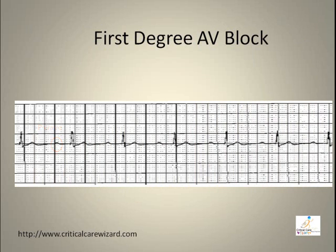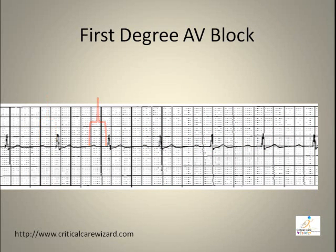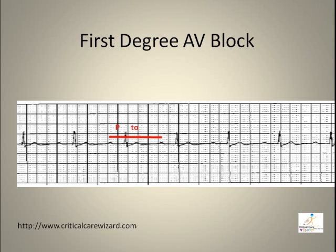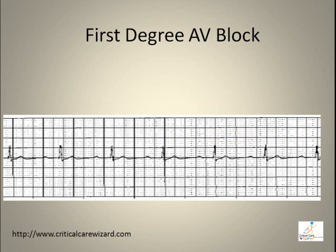In first degree AV block, the P-wave is present before every QRS. The PR interval is constant and more than 0.20 seconds. The rhythm is regular, and the atrial and ventricular rate is the same.